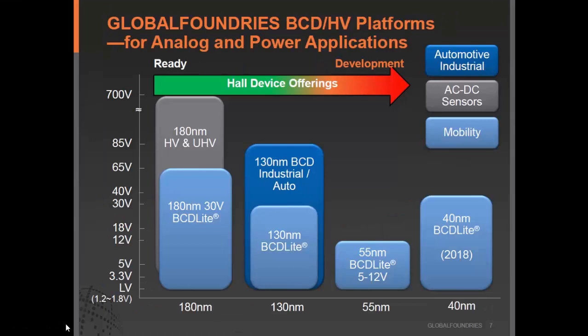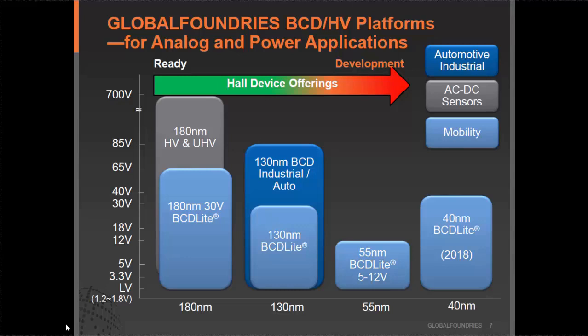This slide shows our HyVee and BCD offering roadmap. You can see we have quite an extensive offering from 180 nanometer technology node down to 40 nanometer technology node. All those platforms are mainly targeted for analog and power applications. Currently, Hall device offerings are available on the 180 nanometer and 130 nanometer technology nodes, and will be further extended to more advanced nodes shortly. Note that some platforms are also automotive-certified — for example, 130 BCD is automotive certified.